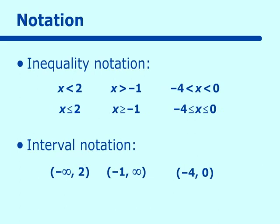Now with the equal to: any time we use infinity, we never use a bracket — we always use a parenthesis. So it's parenthesis, negative infinity, comma, 2 with a bracket. The bracket makes it equal to 2, so this is read for all numbers less than or equal to 2. The next one has a bracket at negative 1, meaning it's equal to negative 1, so it reads all numbers greater than or equal to negative 1. And for the last one, with brackets on both sides, the interval notation reads all numbers between negative 4 and 0 inclusive.